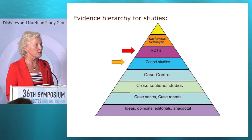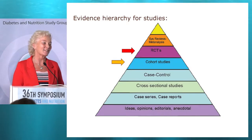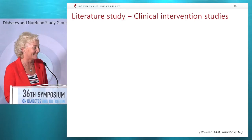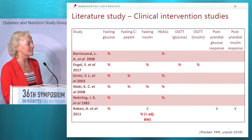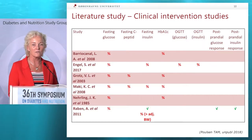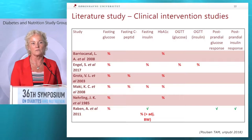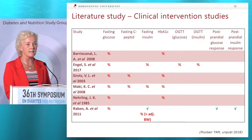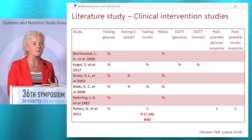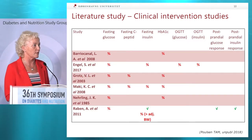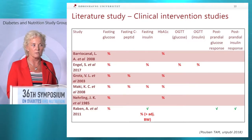Moving to the randomized controlled trials, we have the clinical intervention studies in a similar table. The red signs mean no association — no difference between non-caloric sweeteners and the control situation. At the bottom, there are some differences, and in this case they are in favor of the sweeteners: a lower level of fasting insulin or postprandial glucose and insulin.